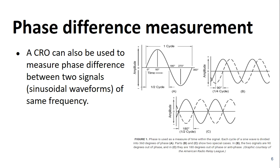Here in the figures, you can see sinusoidal waveforms. Figure A represents one complete cycle of a sinusoidal waveform, in which one cycle of a sine wave is divided into 360 degrees of phase. Phase is used as a measure of time within the signal.